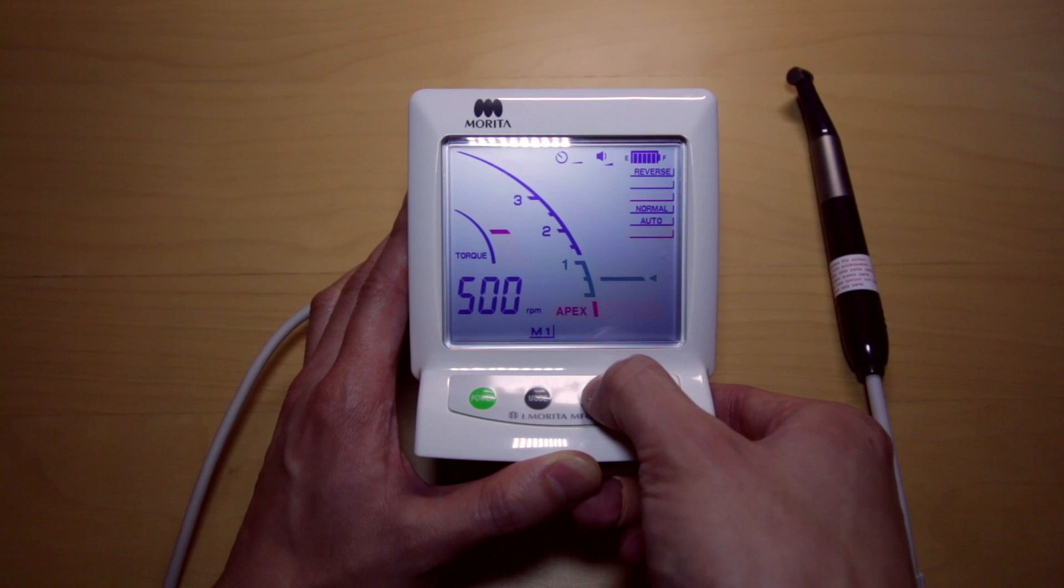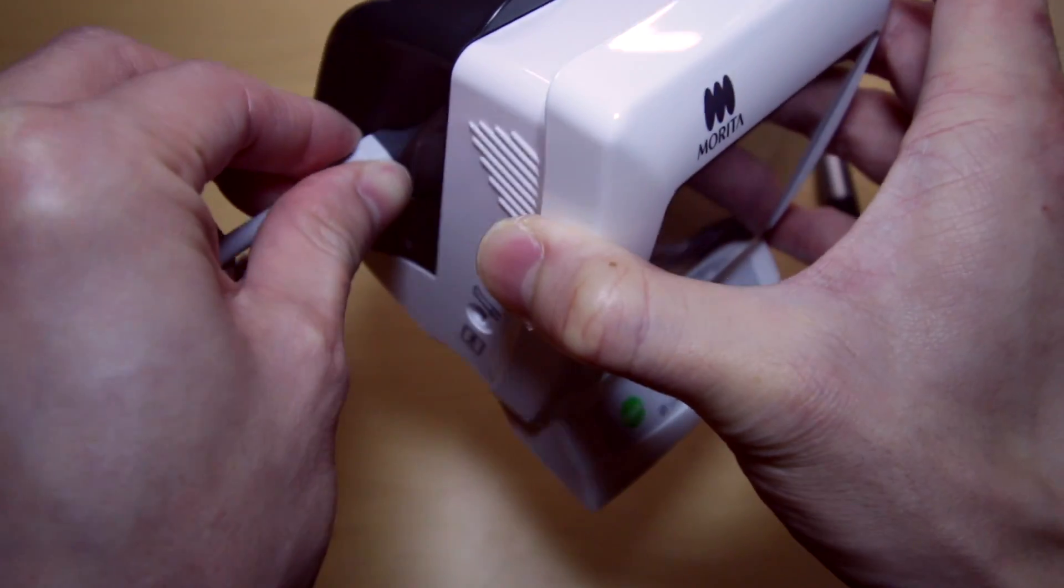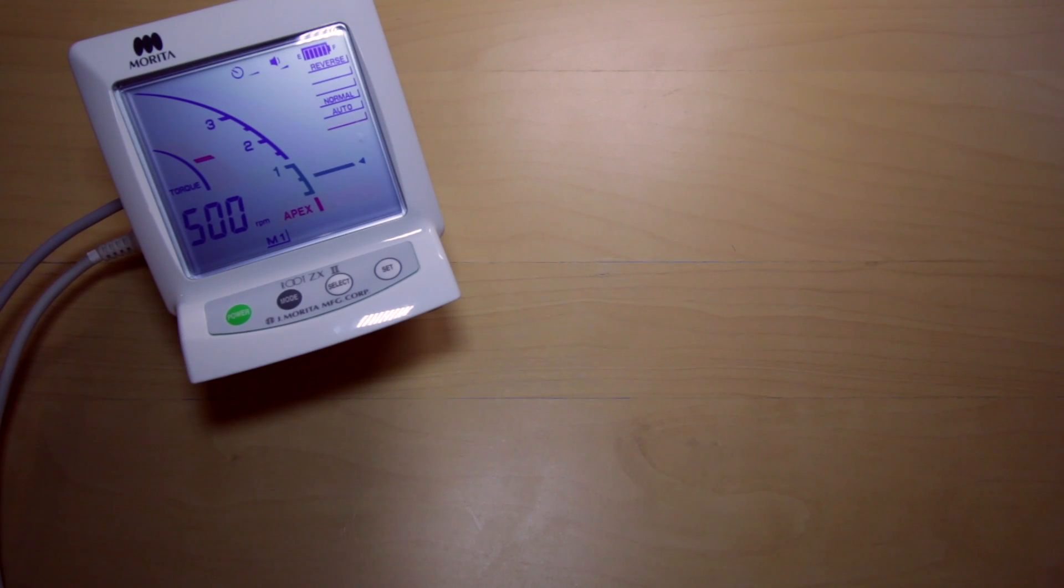This will give you more control over the dentin removal and apex working length determination. Let's move on to the next step where we attach the foot pedal. I like this function over the automatic spinning of the rotary. It gives me a little bit more control.